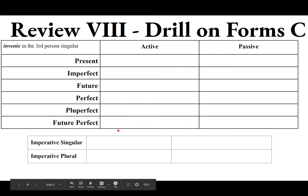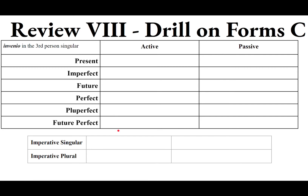Next verb: INVENIO, INVENIRE, INVENI (macron over the E), INVENTUS. This is a fourth conjugation verb. The present stem is found by chopping the O off the first principal part, giving INVENI. For the perfect, pluperfect, and future perfect active, take the third principal part and chop off the I: INVEN is the perfect stem.